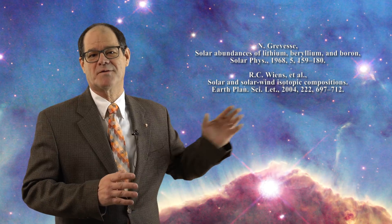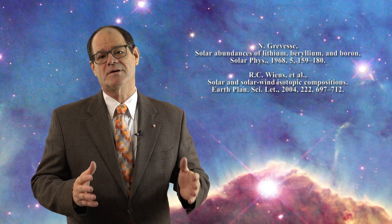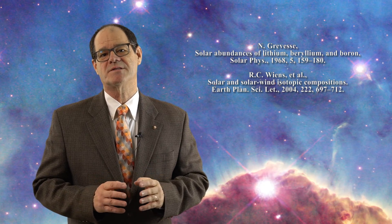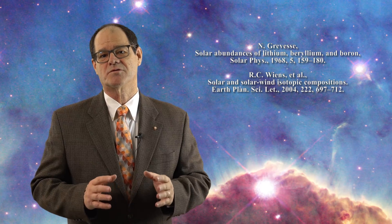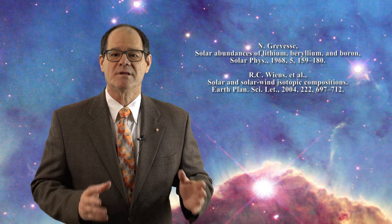It has long been known that lithium has a very low abundance on the surface of the Sun when compared to its abundance in meteorites. This has been addressed in these papers. The problem for the standard solar model is that the surface of the Sun has less than 1% of the amount of lithium that was supposed to be present in the proto-solar gas cloud. So what happened to lithium?